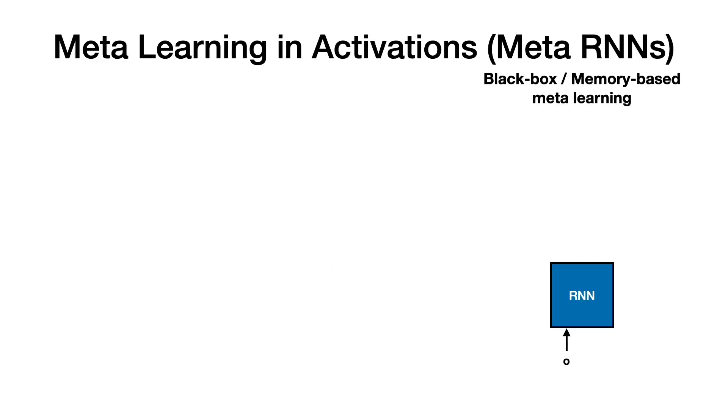In contrast, one of the most simple meta-learners to date are meta-recurrent neural networks. They learn purely in their activations without relying on backpropagation and gradient descent. A simple RNN can implement a learning algorithm in its parameters.